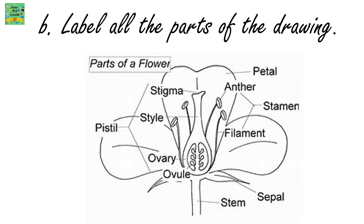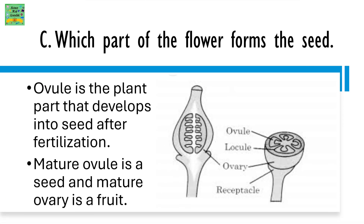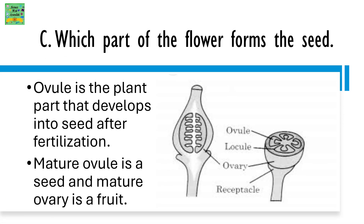Label all the parts of the drawing. The question is: which part of the flower forms the seed? The female reproductive part has the ovary, and in the ovary there is an ovule. The ovule is what develops into a seed when the plant matures and a fruit is formed. The ovary that covers the ovule becomes the fruit.